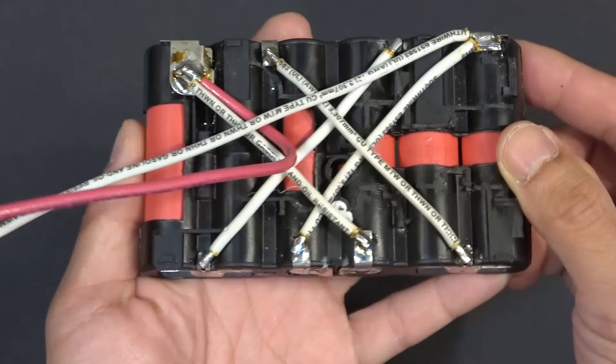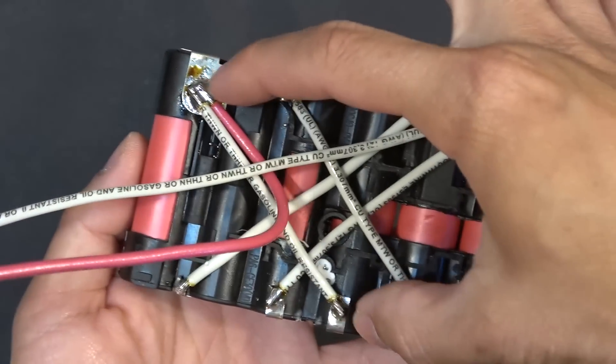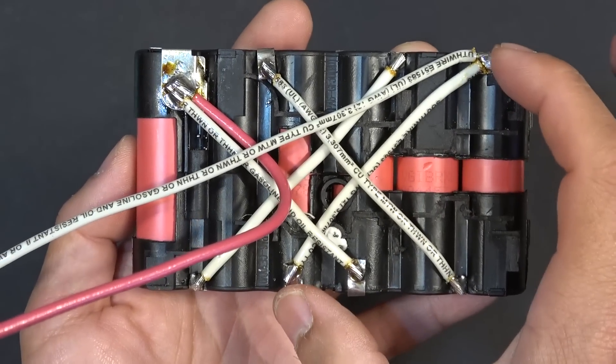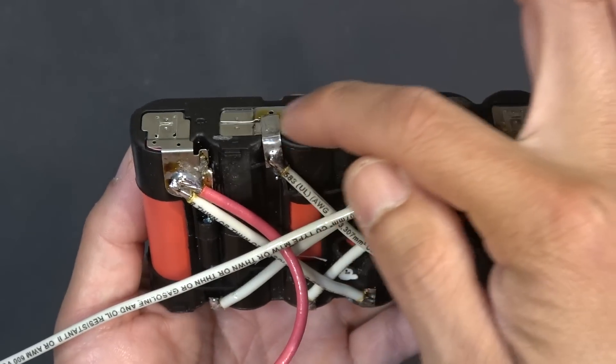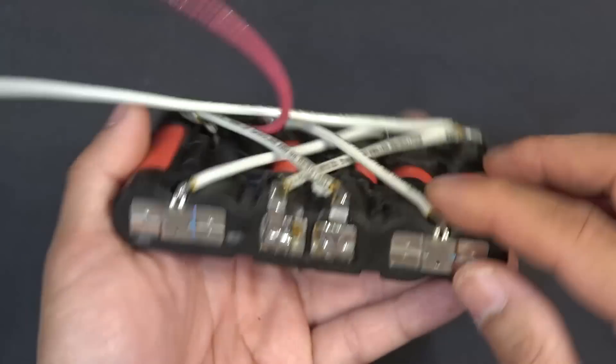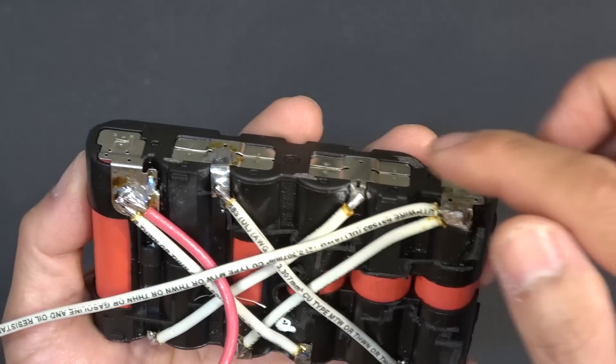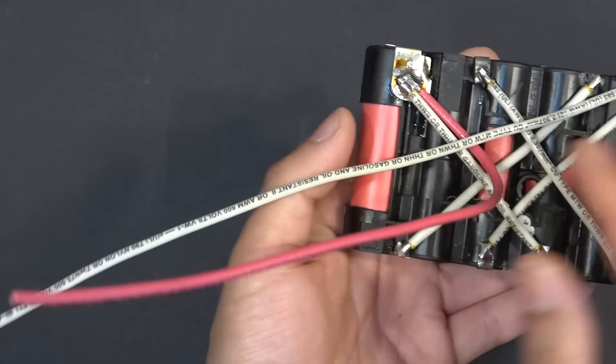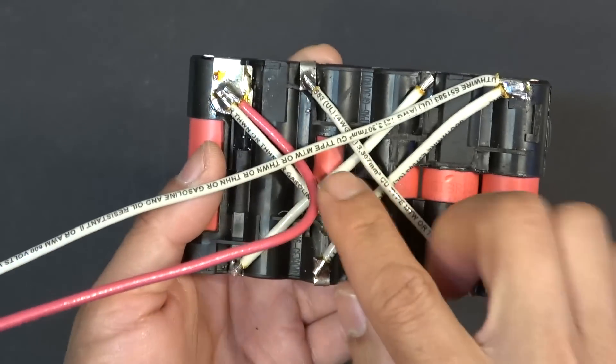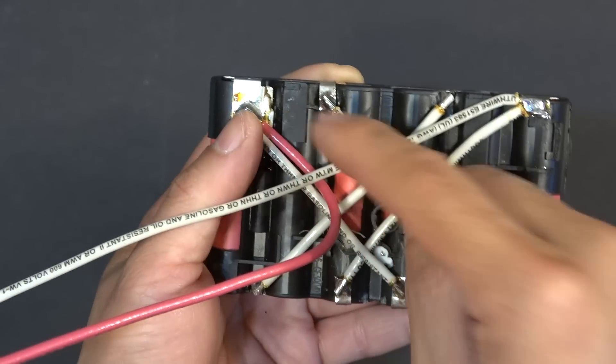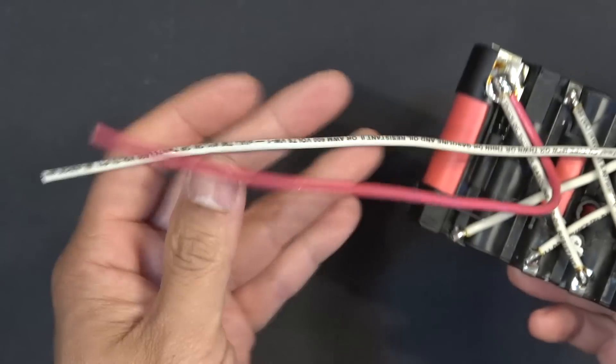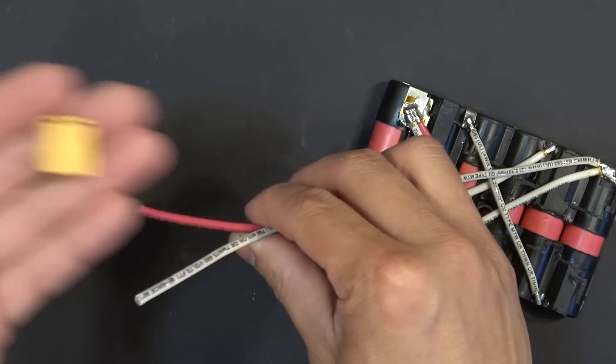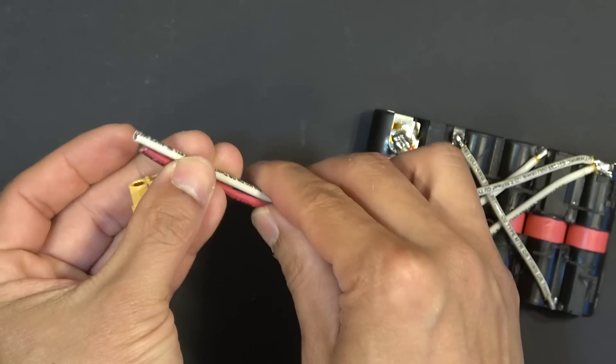So here I have everything connected together - positive terminals together, negative terminals together, and the other negative and positive terminals are connected together. This one connected to this one, that's it. And I also soldered two extra wires that go from the positive terminal and the negative terminal, that way I can solder my XT60 connector externally.